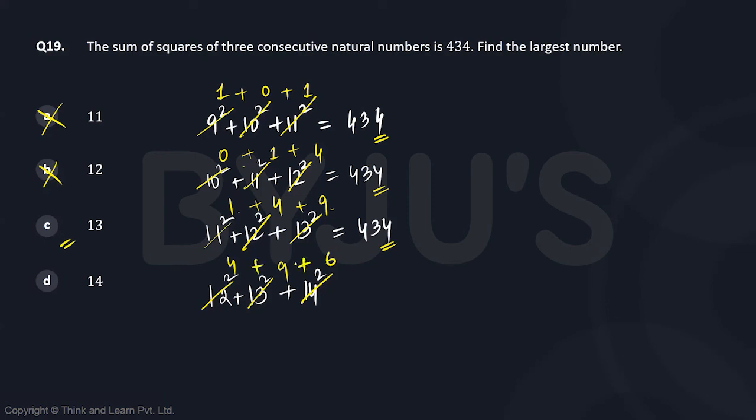Their sum will not end in 4. It will end in 9, right? So d is also not our answer, so cross d. 13 is our answer. This is the largest number.